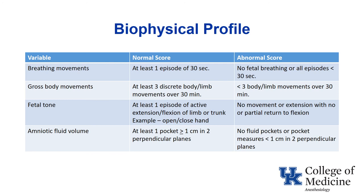For breathing movements, they want at least one episode of at least 30 seconds during the 30 minutes — two points; otherwise zero. For gross body movements, at least three discrete movements over 30 minutes — two points; fewer than three, zero points. For fetal tone, at least one episode of active extension and return to flexion — two points; no movement or failure to return to flexion is zero points. For amniotic fluid volume, they look for at least one pocket of fluid at least 1 centimeter in two perpendicular planes — two or zero points.